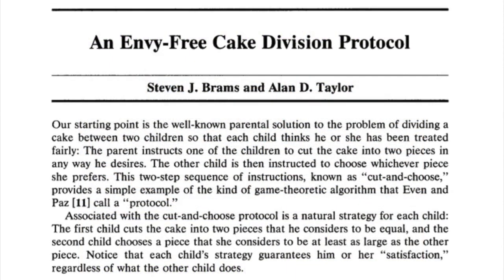With two players, the first player cuts the cake in half. With three players, the first player cuts the cake into thirds. With four players, Brahms and Taylor showed, the first player cuts the cake into five equal-looking pieces. He passes them to Carol, who trims two at most to create a three-way tie for largest in her eyes. She sets the trimmings aside and gives the five pieces to Don, who trims one at most to create a two-way tie for largest in his eyes. Alice, the fourth player, now selects the piece she likes best. Choosing proceeds in the reverse order from cutting, with the proviso that anyone who trimmed one or more pieces must take one of them, if any are still available when it's his or her turn to choose. The extra piece to begin with assures that no player gets second best. If someone takes a piece she likes before it's her turn to choose, an equivalent piece or better always remains on the table.